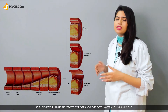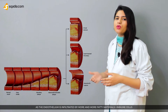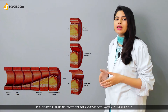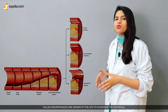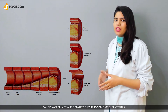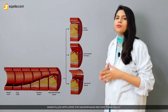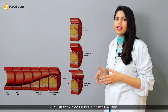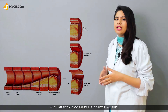As the endothelium is infiltrated by more and more fatty materials, immune cells called macrophages are drawn to the site to scavenge the material. When filled with lipids, the macrophages become foam cells, which later die and accumulate in the endothelial linings.